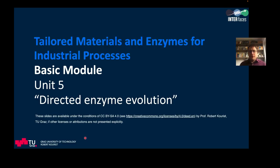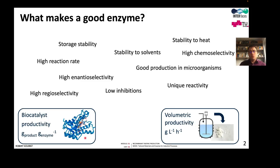Welcome to the MOOC tailored materials and enzymes for industrial processes. My name is Robert Kourist and this is the fifth unit of the basic module dealing with directed enzyme evolution. In the previous unit, I explained that the catalytic properties of enzymes are installed in the primary sequences. To improve these properties for applications, we use rational protein design or directed evolution.